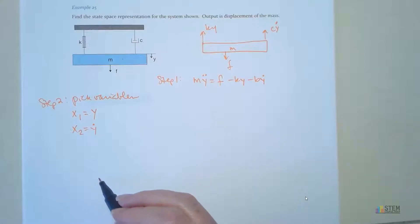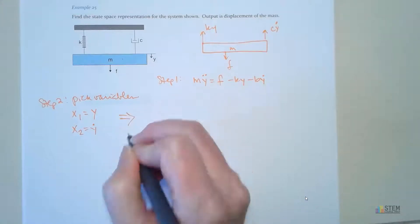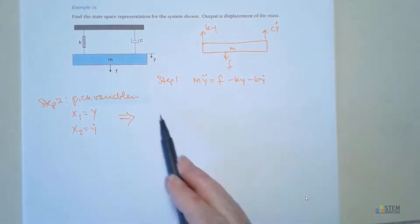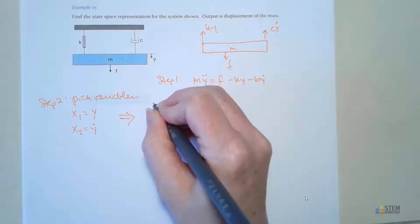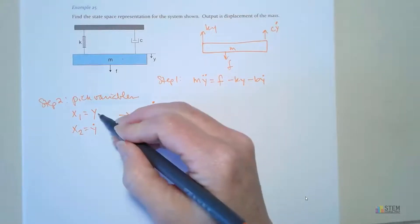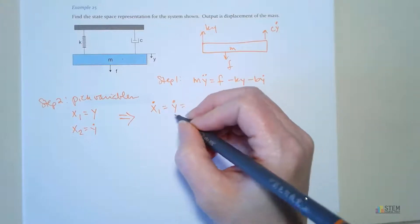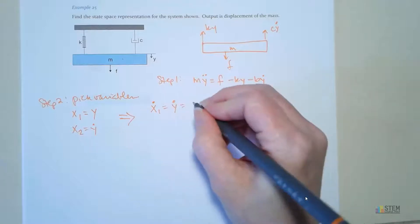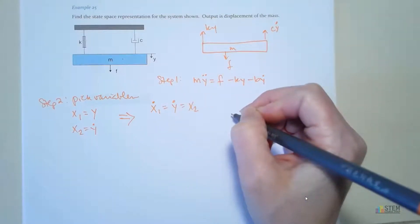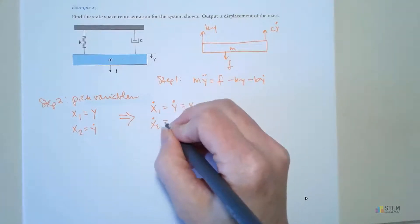Now we've got that. Now what we want to do is take the derivative. I always just draw this little arrow to indicate I'm going to take the derivative. If I take the derivative, I'm going to have x1 dot equals y dot. Remember, we want to write everything in terms of these two variables here. So y dot is what? Hopefully you said x2, so that's equal to x2. And then when we do this equation, take the derivative, we're going to get x2 dot equals y double dot.